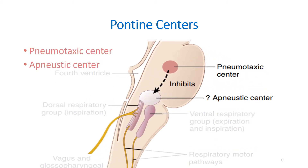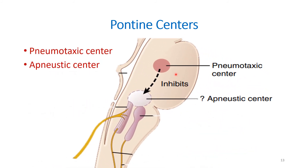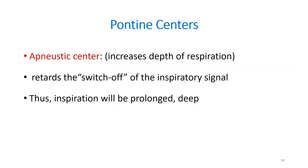In the diagram, we can see the pons with the pneumotaxic center and the apneustic center. The apneustic center stimulates the DRG and prolongs inspiration, whereas the pneumotaxic center inhibits the apneustic center. The apneustic center increases the depth of respiration by retarding the switch-off of the inspiratory signal, thus prolonging and deepening inspiration. Recall that in the inspiratory ramp signals, there is a switch-off signal that turns off excitation; the apneustic center retards this switch-off, resulting in prolonged, deep inspiration — apneusis means long, increased depth of respiration.